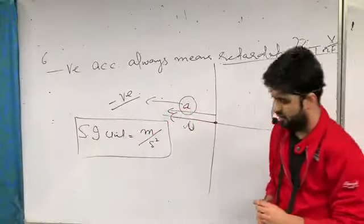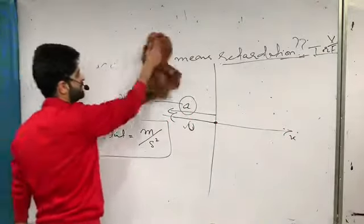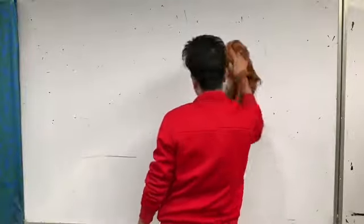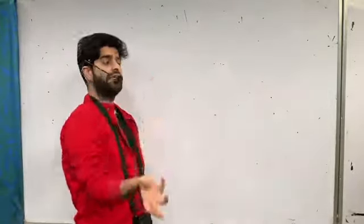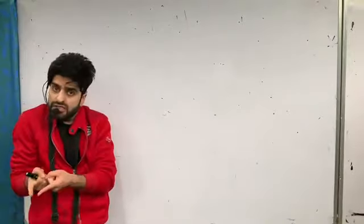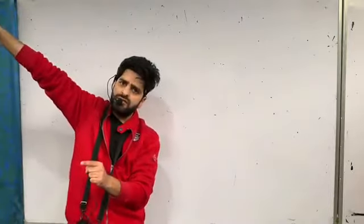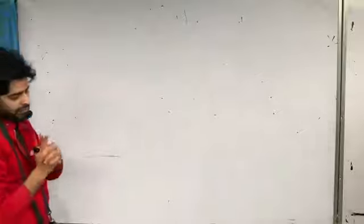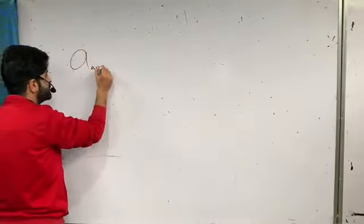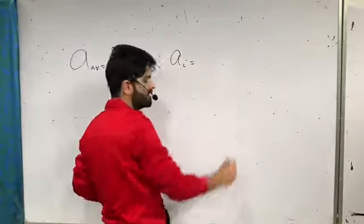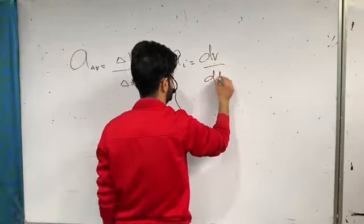In summary: acceleration is the rate of change of velocity — how quickly a particle will speed up or slow down. We studied two types: average acceleration, which is total change in velocity divided by total time taken; and instantaneous acceleration, which is the acceleration at a particular instant of time, given mathematically as dv by dt.